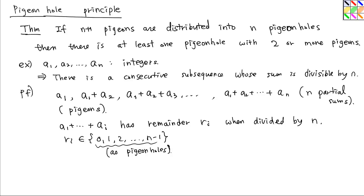Suppose that one of the ri's is 0. If ri equals 0 for some i, then a1 + ... + ai is divisible by n. In this case we are done, because we know that there is a consecutive subsequence whose sum is divisible by n.